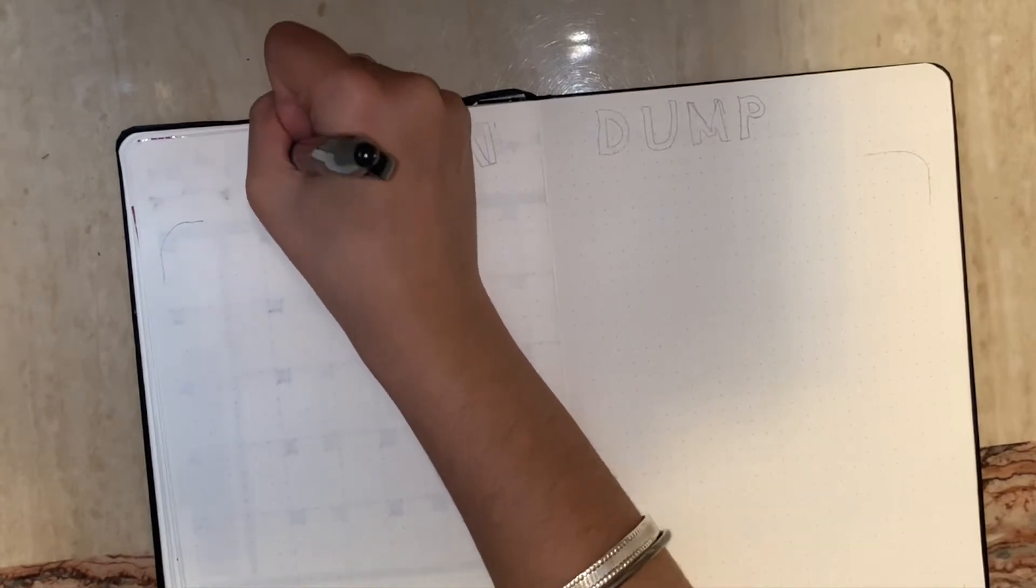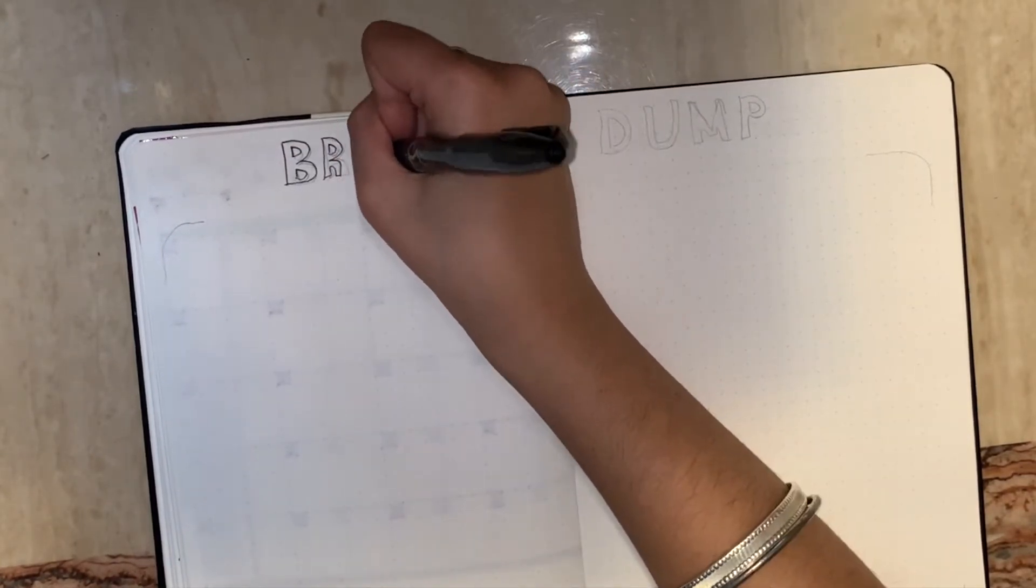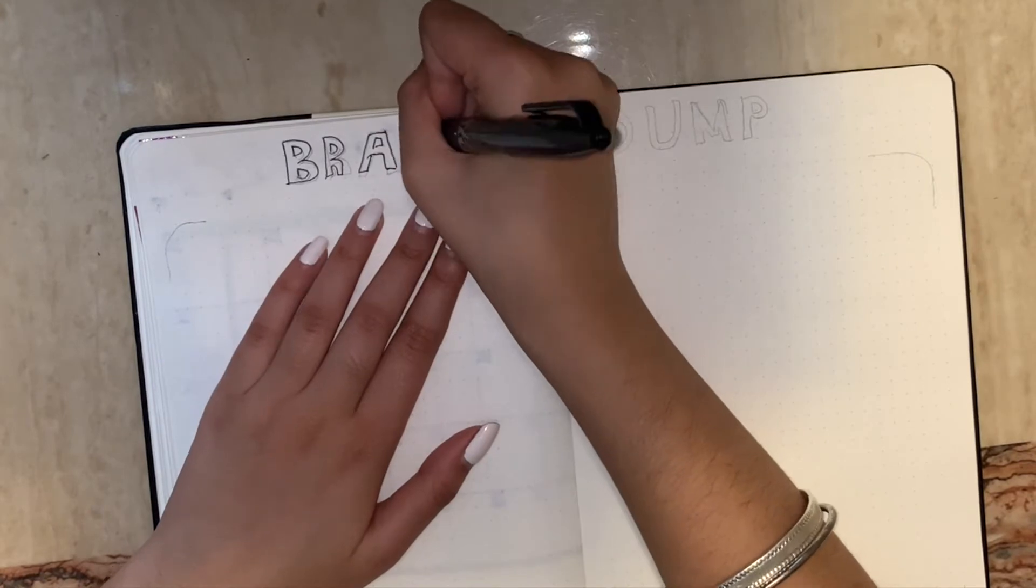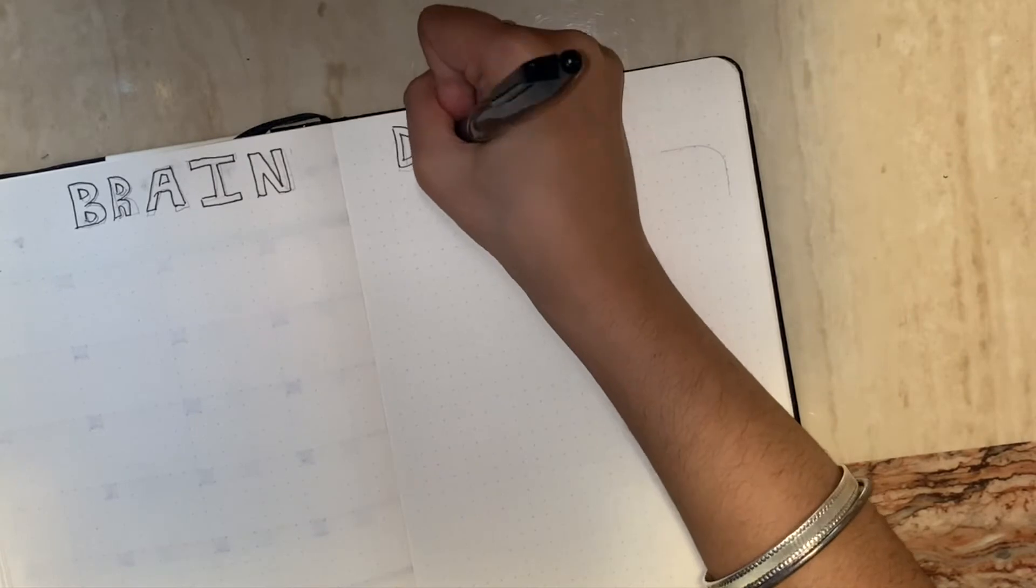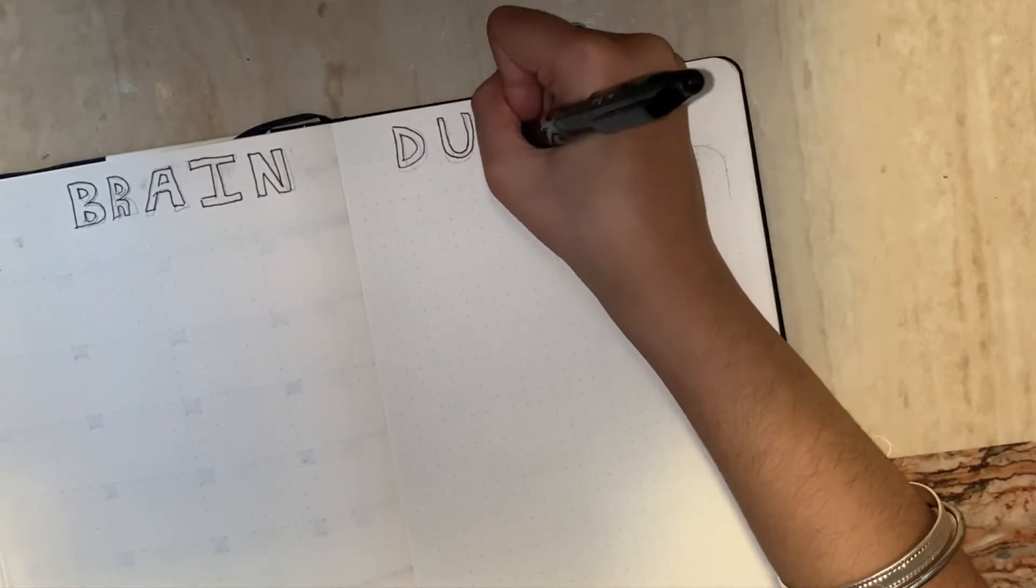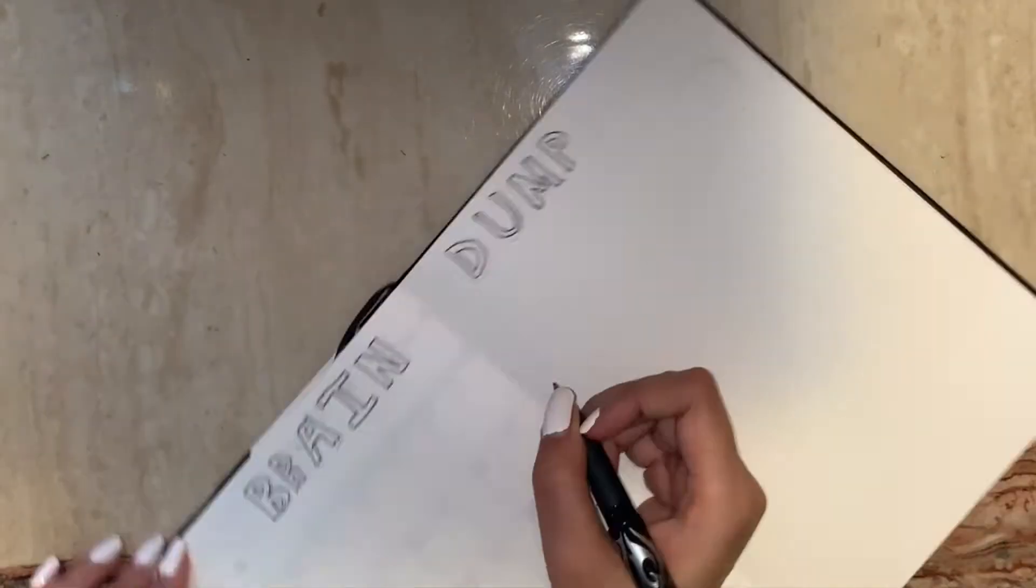And then on the next page we have our brain dump. This time I'm making it two pages because last month I made it one page and had to add another page, so it's going to be two pages. I'm just adding a box.